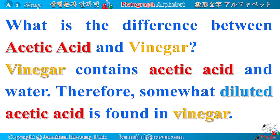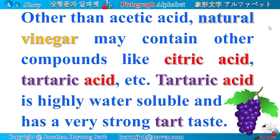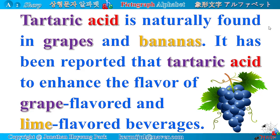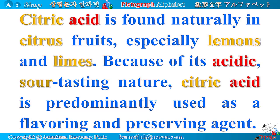What is the difference between acetic acid and vinegar? Vinegar contains acetic acid and water, so somewhat diluted acetic acid is found in vinegar. Natural vinegar may also contain other compounds like citric acid, tartaric acid, etc. Tartaric acid is highly water-soluble, has a very strong tart taste, and is naturally found in grapes and bananas. Citric acid is found naturally in citrus fruits, especially lemons and limes, and is predominantly used as a flavoring and preserving agent.